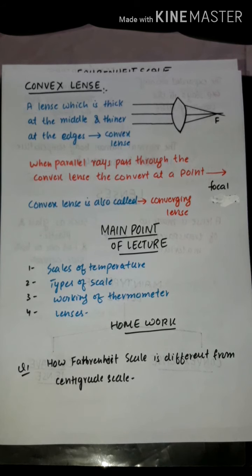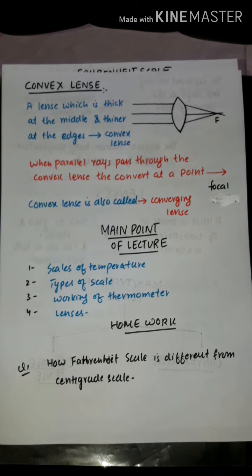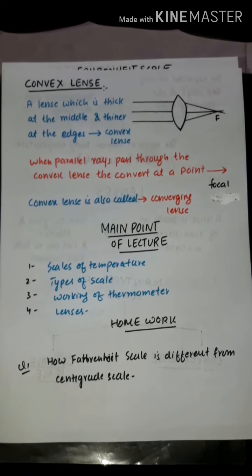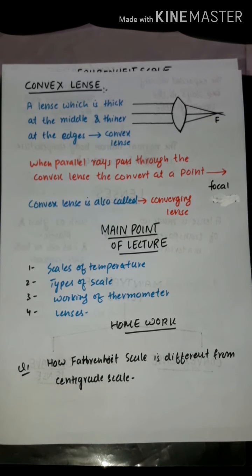Before going to homework, students should memorize the scales of temperature — Fahrenheit and degree centigrade — and the normal human body temperature. Remember that convex lenses are also called converging lenses. For board exams, remember the MCQs and fill-in-the-blank questions: two fixed points, 100 equal parts for centigrade, and 180 equal parts for Fahrenheit.